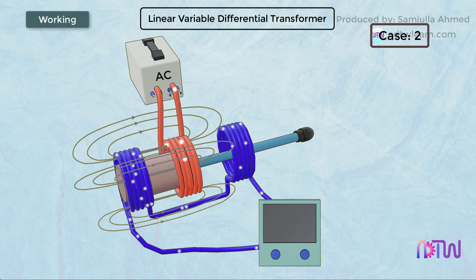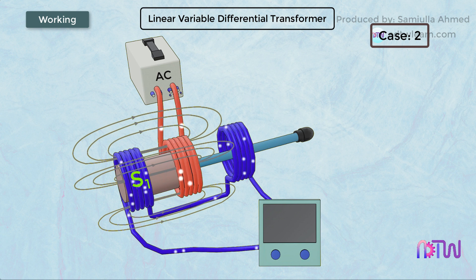Case 2: When the core is at the left-hand side. Since the iron core is closer to the secondary coil S1, more flux links with the secondary coil S1. Thus output EMF of the secondary coil S1 would be greater than the EMF generated in the secondary coil S2.